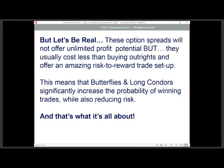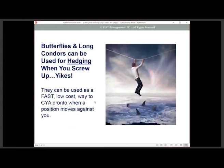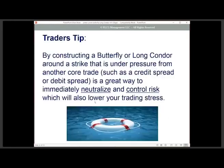The other great thing about these two strategies is that when you mess up — and you're going to mess up in trading — they can be used as a fast, low-cost way to cover yourself when your position moves against you. By constructing either a butterfly or a long condor around a strike that's under pressure from another core trade, such as a credit spread or debit spread going against you, this becomes a great way to immediately neutralize and control your risk and reduce trading stress.